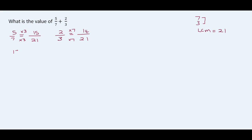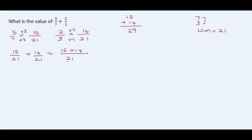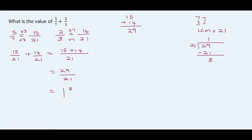So this now becomes 15 over 21 plus 14 over 21, giving us a denominator of 21. We add 15 and 14: 5 plus 4 is 9, 1 plus 1 is 2 — so this gives us 29 over 21. We divide 29 by 21: there is 1 group of 21 in 29. 1 times 21 is 21, subtract, and we're left with 8. So this gives us 1 and 8 over 21, and we can't further simplify.